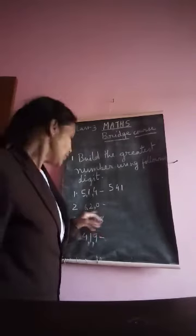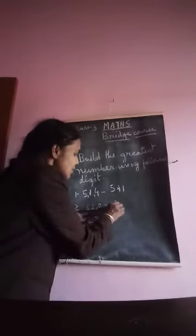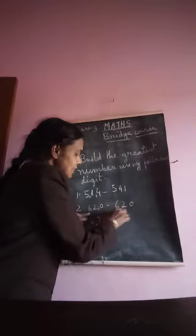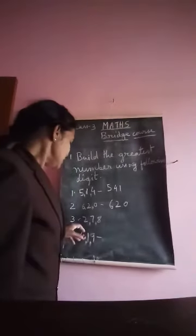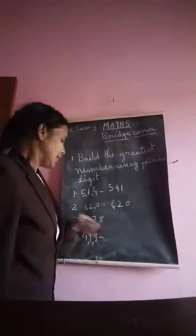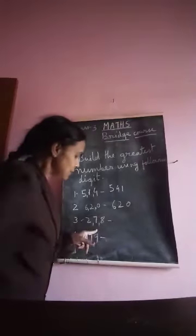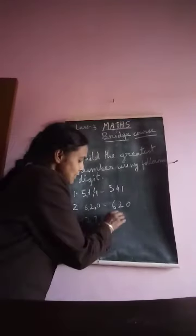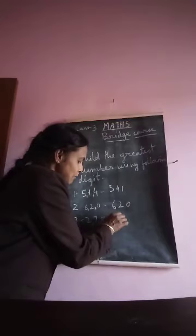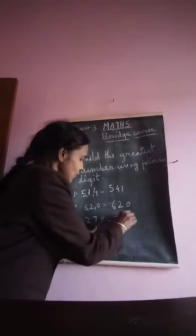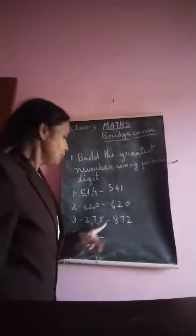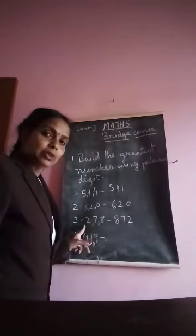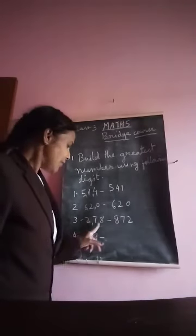For digits 6, 2, and 0: write in descending order — 6, then 2, then 0. So 620 is the greatest number. For digits 2, 7, and 8: write 8 first, then 7, then 2. So 872 is the greatest number built using digits 2, 7, and 8.